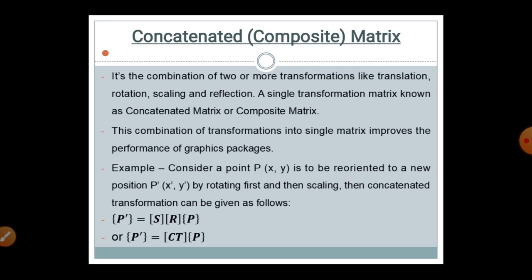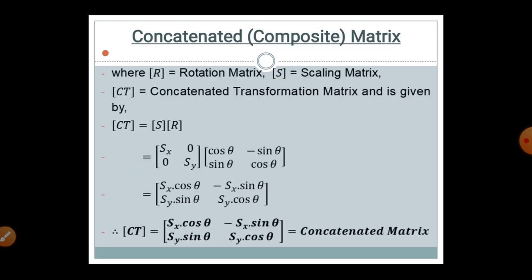More precisely, P' equals the composite matrix CT multiplied by P, where the R matrix is the rotation matrix, the S matrix is the scaling matrix, and CT is the composite matrix given by: CT = R × S, that is the rotation matrix multiplied by the scaling matrix.